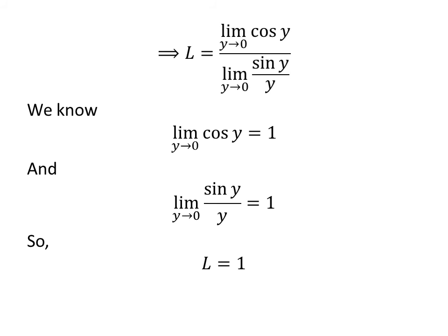These statements imply L is equal to 1. So, the limit of arctangent of x upon x as x approaches 0 is equal to 1.